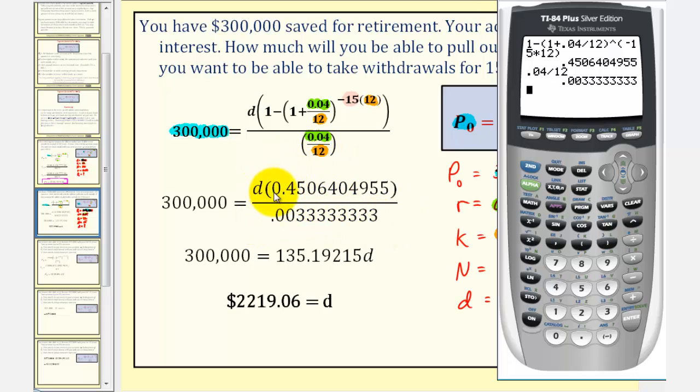Now for the next step, we want to find the coefficient of D, so we'll find this quotient and then multiply by D. 0.4506404955 divided by 0.00333333333 gives us our coefficient. Now we have the equation 300,000 equals 135.19215D.